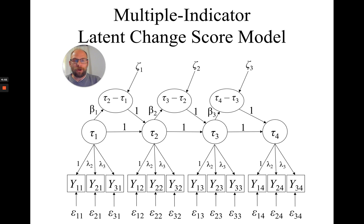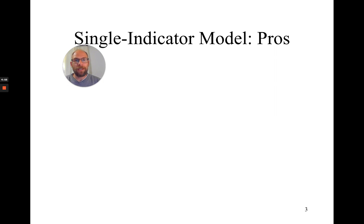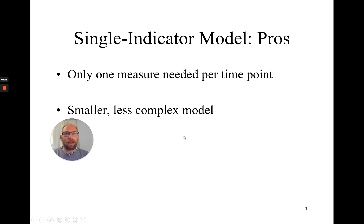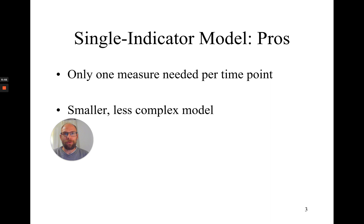With a single indicator model, the most obvious advantage is that you only need one measure repeatedly observed — one score, one test, one questionnaire, or one item. That can be advantageous when a longitudinal study with multiple indicators is costly. The model is also more compact and less complex, making it perhaps easier to specify and to report in a paper. But that's pretty much where the advantages of single indicator models end.